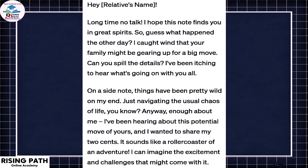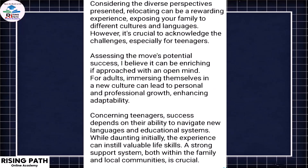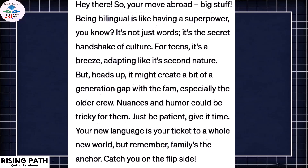As you can see from the beginning, it's an informal letter — you are not going to be very formal with the relative. You use phrases as if you are just talking to them. This slide shows the elaboration and evaluation of other points in paragraphs three, four, and five — for example: 'Considering the diverse perspectives,' 'Assessing the moves,' and 'Concerning teenagers, success depends on their ability.'